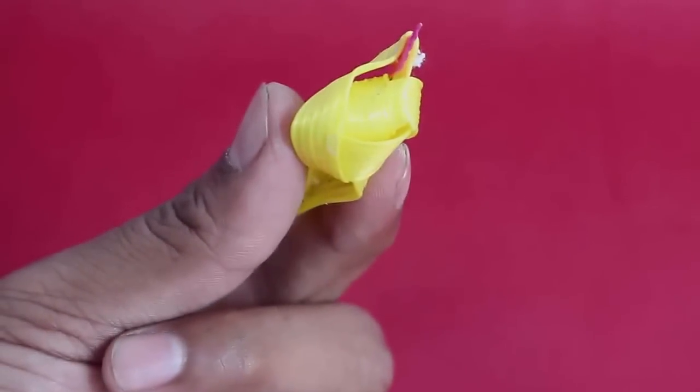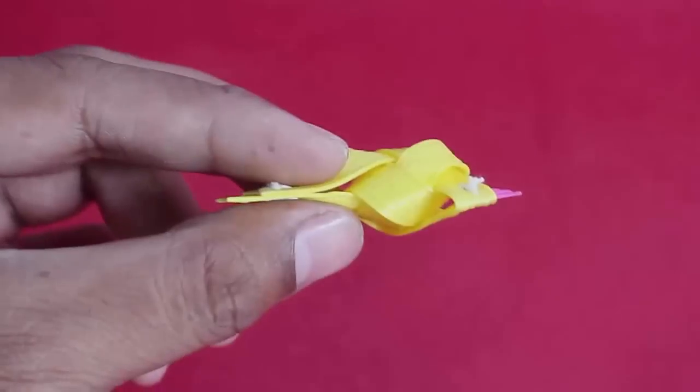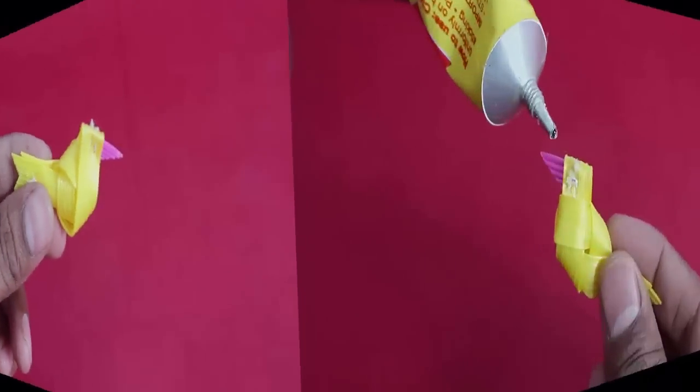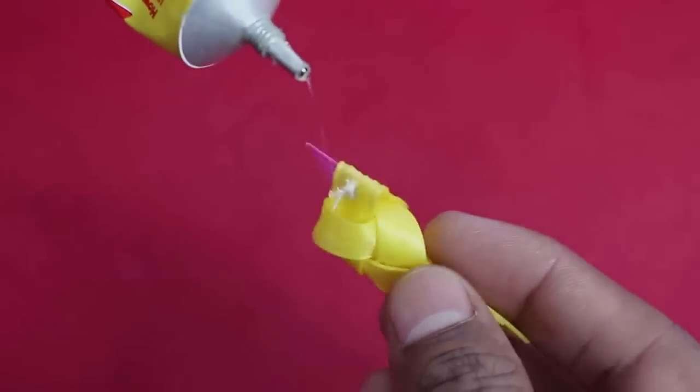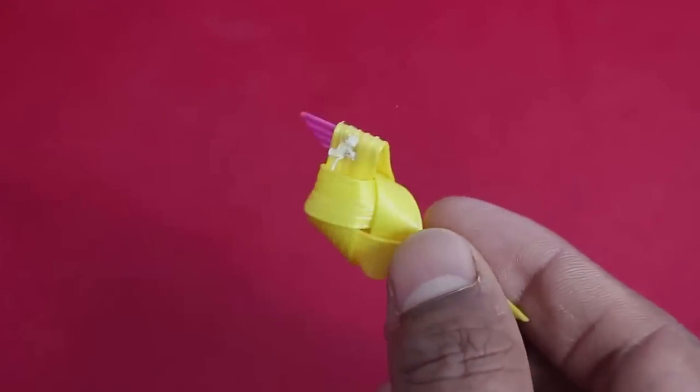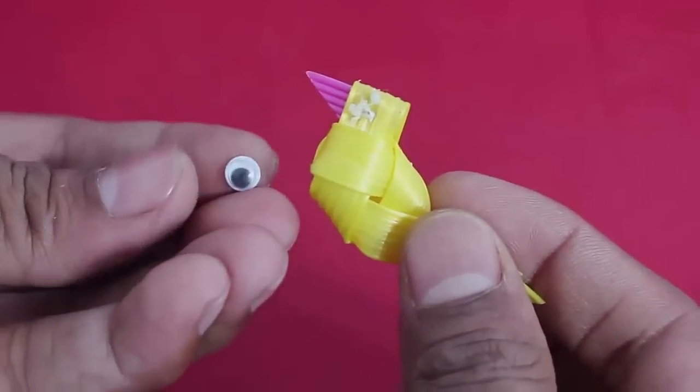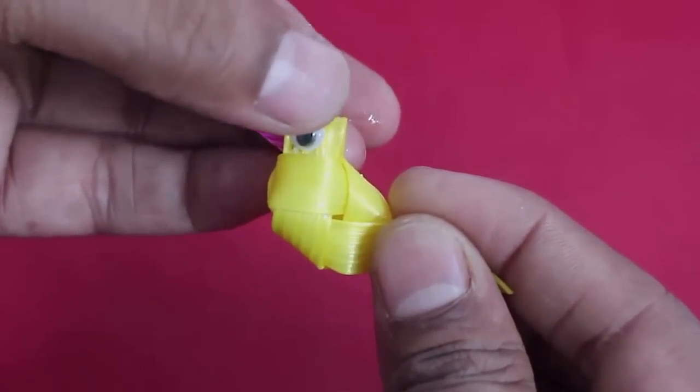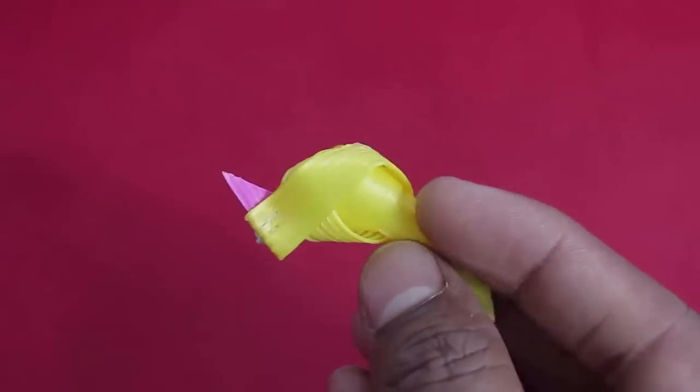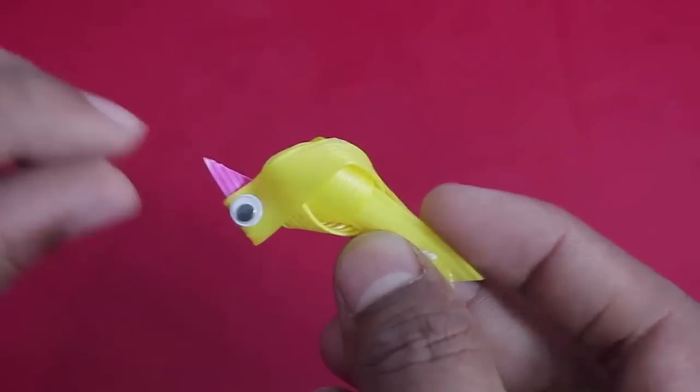Well finally, these are the various views of the bird - the top view, the side view. Apply some glue and then stick eyes. The eyes lend a character to the bird and they look very pretty.